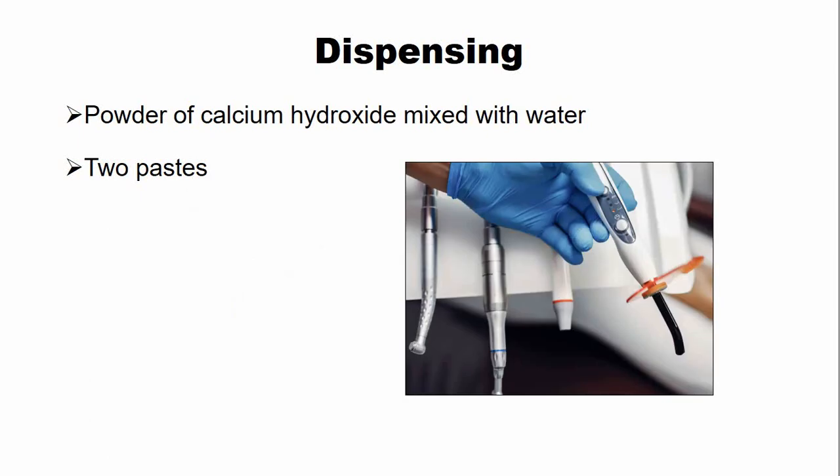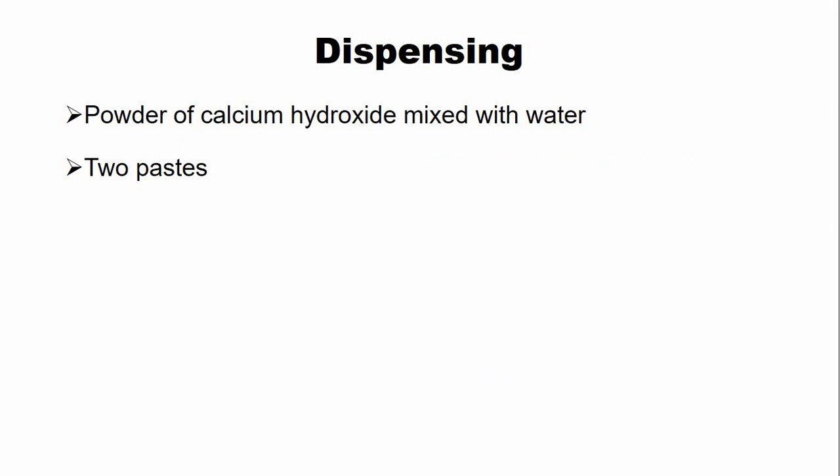The most common form in which calcium hydroxide cement is available is the toothpaste form. Some light-activated calcium hydroxide cements are also available, which contain a light-activated resin within their composition.